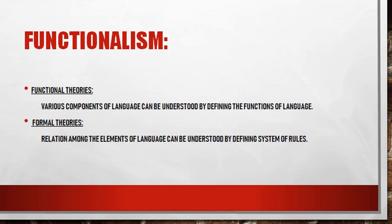In functionalism we encounter two theories: functional theory and formal theory. Functional theory simply means that there are different components of language, and we can understand them when we look at their function — what functions language performs in society or according to human behavior. Formal theory tells us what rules and regulations combine to form the elements of language; we discuss the elements and structure of language by setting rules and principles.